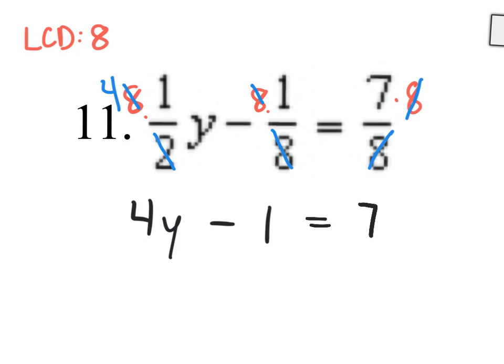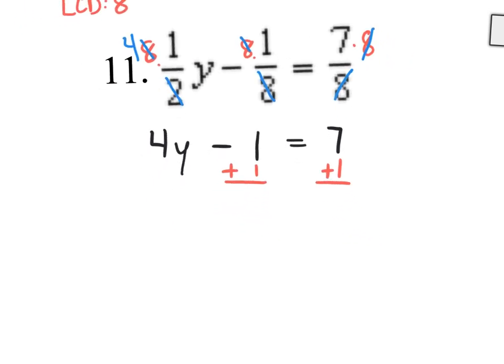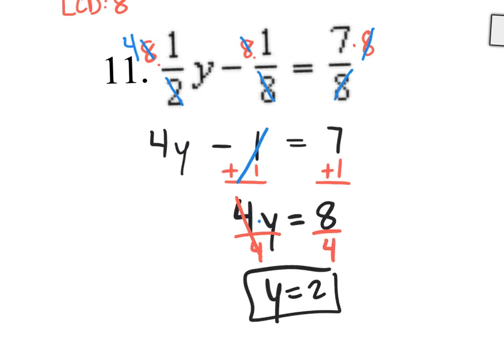Number 11 might have scared you, but now it's a piece of cake. Get rid of the minus 1 by adding 1 to both sides. Negative 1 plus 1 cancels. Bring down 4y, equal sign, and 7 plus 1 is 8. We have 4 times y equaling 8. To get rid of the multiplication of 4, divide both sides by 4. That cancels, leaving y equals 2. That's your final answer on number 11.